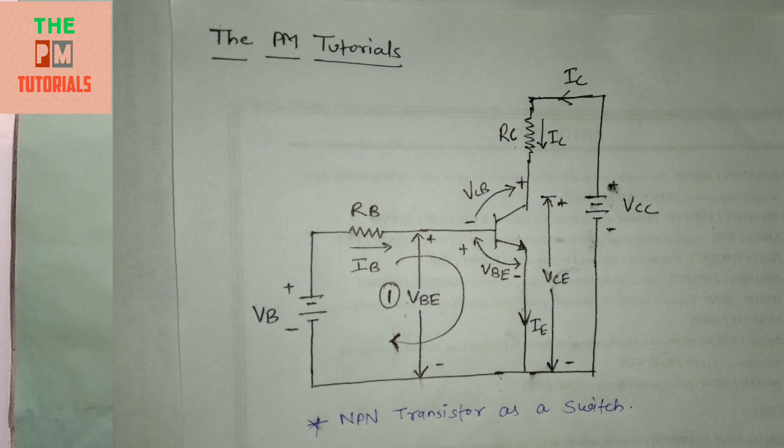You can see that IB current flows through the NPN transistor. Across the NPN transistor, the base-emitter voltage is positive-negative as shown here, and base-collector voltage has been shown here. And the current through loop 2 is IC current flowing in this figure.